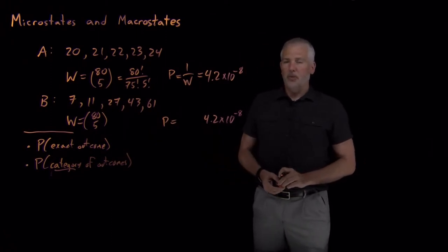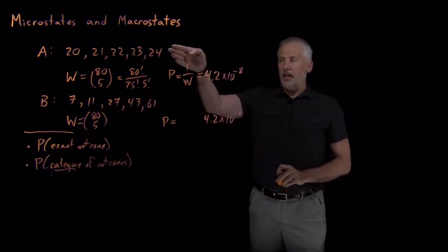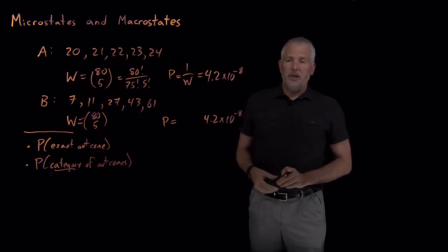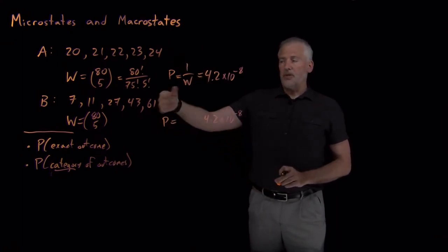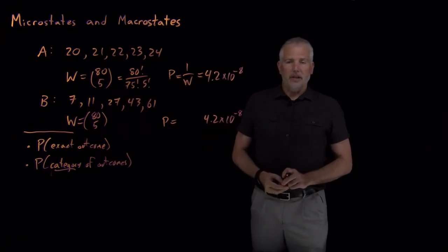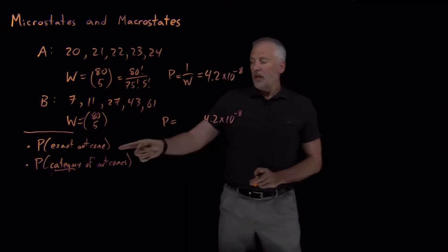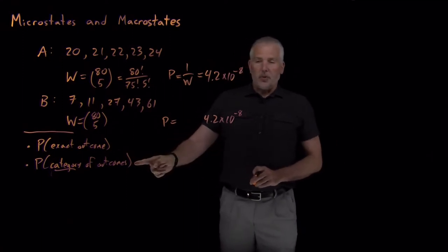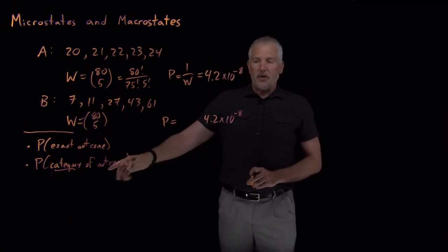He was probably more interested in the probability that the five lottery numbers are consecutive, which is what surprised him in the first place, or that the five lottery numbers are not consecutive, don't have any consecutive numbers involved. So that second set of questions, whether the numbers are consecutive or not, that's a particular category of outcomes.